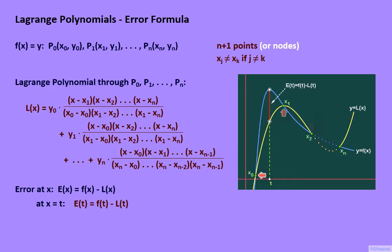Each node xⱼ is special because f(xⱼ) is equal to L(xⱼ). And so E(xⱼ), which is equal to f(xⱼ) - L(xⱼ), is equal to 0.